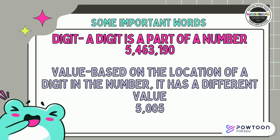Let's go over some important words. Digit — a digit is part of a number. For instance, in this number, you can see the digit 5 at the beginning. Value — based on the location of a digit in the number, it has a different value. We see 5 again at the beginning and the end of the number. Both of these 5s have a different value because of their place value.